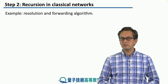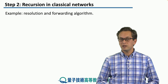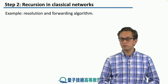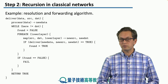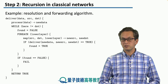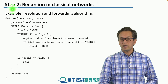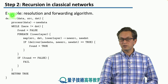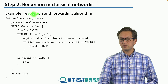Now let's think about an example of how we do resolution and forwarding. We introduce the following algorithm for recursive classical networks. This simple algorithm looks for the destination of the original message. The function is called "deliver," and it takes the data of the packet, the source address, and the destination address.